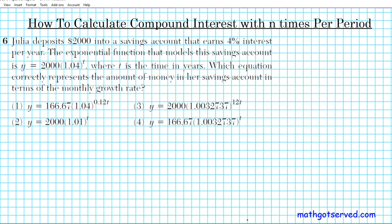Question six reads: Julia deposits $2,000 into a savings account that earns 4% interest per year. The exponential function that models this savings account is y equals 2,000 times 1.04 raised to the t power, where t is the time in years. Which equation correctly represents the amount of money in her savings account in terms of the monthly growth rate?